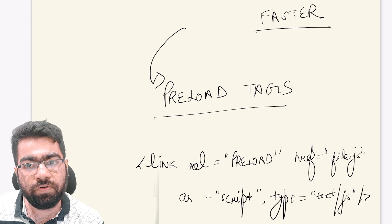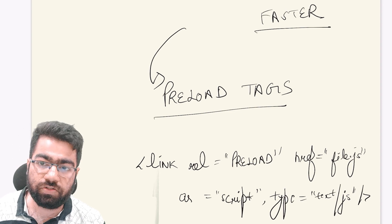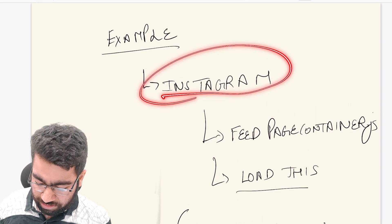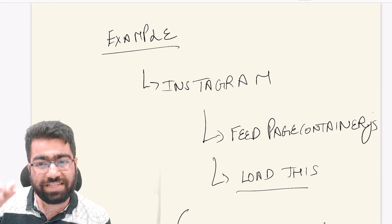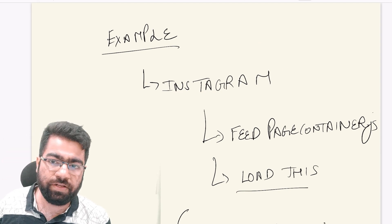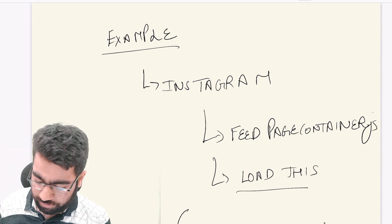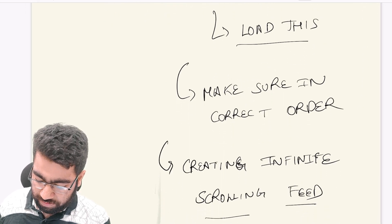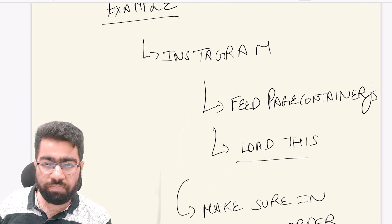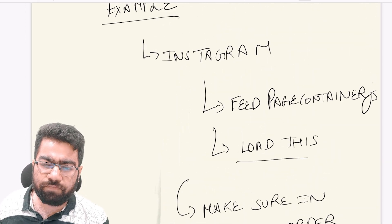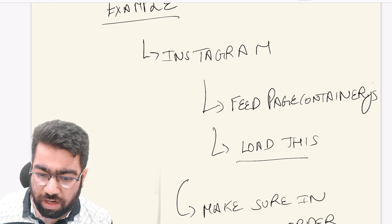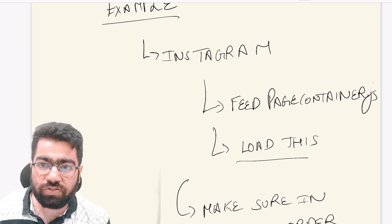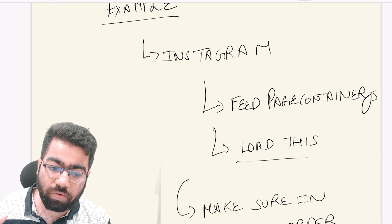As soon as the browser reads these preload tags, it starts fetching those resources or executing whatever the script is doing, and then further processes and renders your HTML page. For example, if you are using Instagram, it has a feed page container to display the feed — feed-page-container.js. What they will do is simply add this to the preload tags.